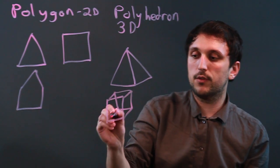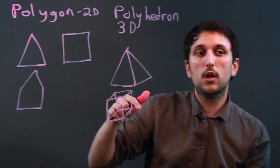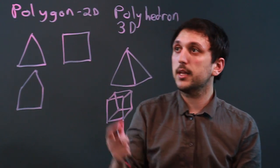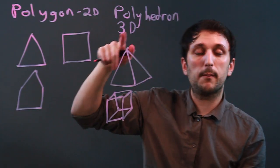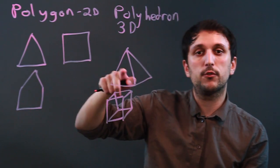And again, each of the faces are polygons. So again, to remember: a polygon is a two-dimensional closed shape, and a polyhedron is a three-dimensional closed shape.